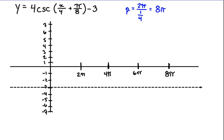Since we're graphing sine, it will start at our midline and go up to the maximum at 2π, which is 4 above our midline at 1. Then back down to the midline, down to the minimum at negative 7, and then back up to the intercept. So our sketch of sine should look like the following.